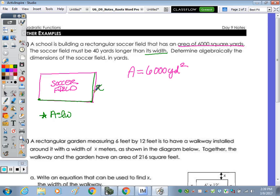40 yards longer would be, so say the width was 10, 40 yards longer would be 50. So this is X plus 40. We're going to do length times width. So X times X plus 40 equals 6,000.